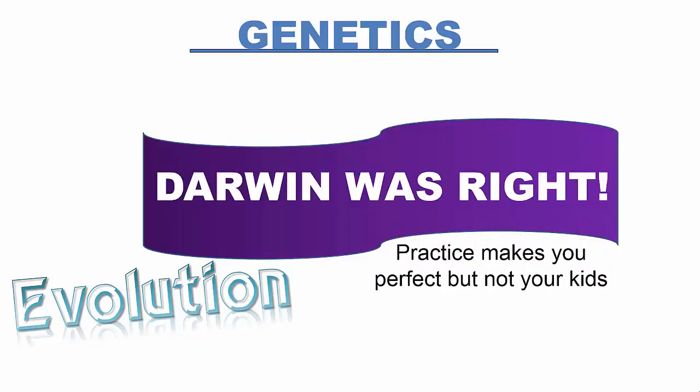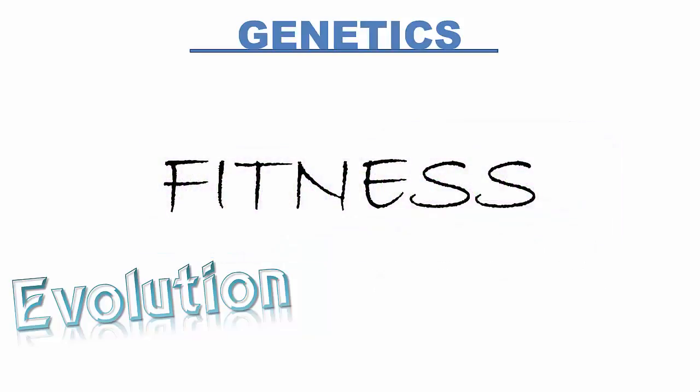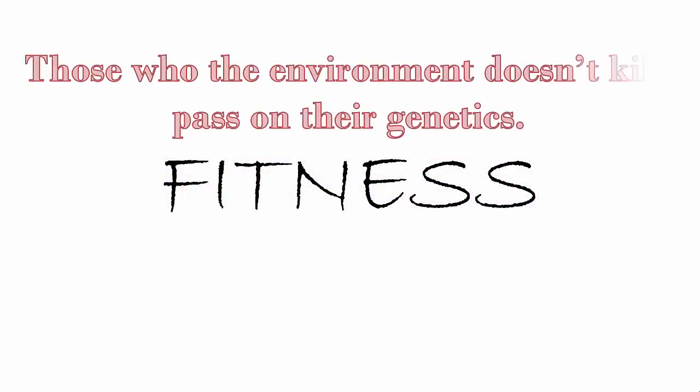For Darwin, the ability to survive and reproduce, what he called fitness, is a species characteristic, not an individual one.